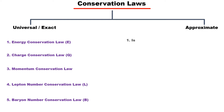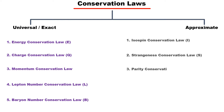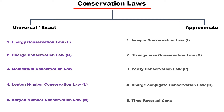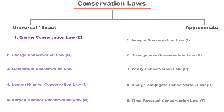The universal conservation laws are energy conservation, charge conservation, momentum conservation, lepton number conservation, and baryon number conservation. The approximate conservation laws include isospin conservation, strangeness conservation, parity conservation, charge conjugation, and time reversal conservation. In this lecture, we will discuss two universal conservation laws: energy and charge conservation.